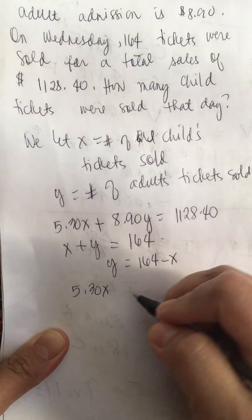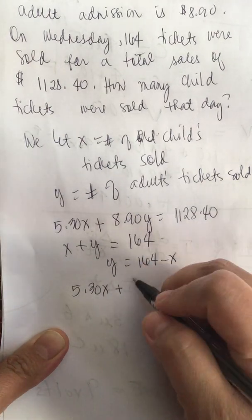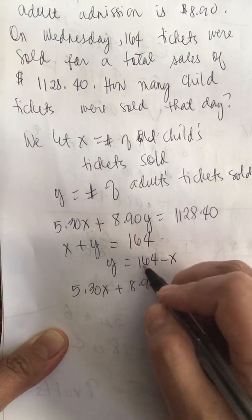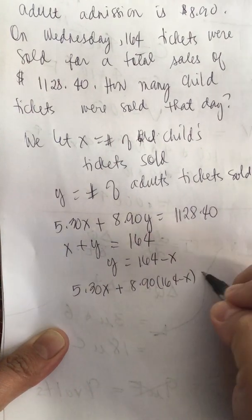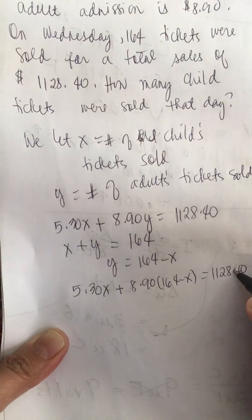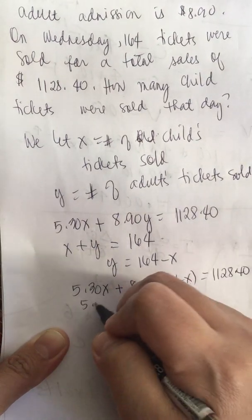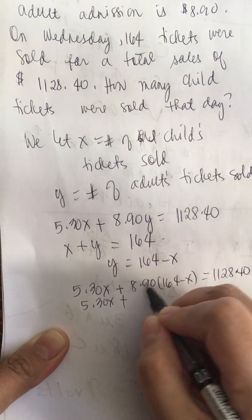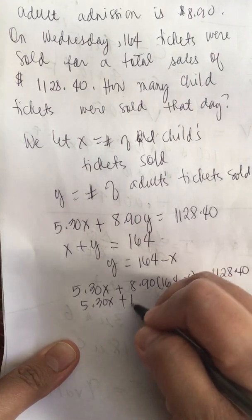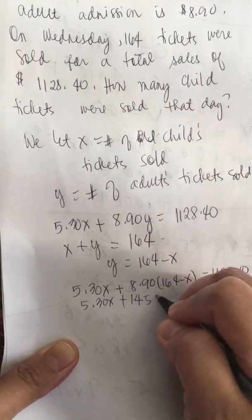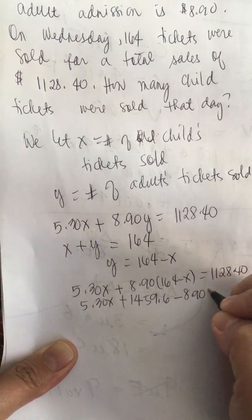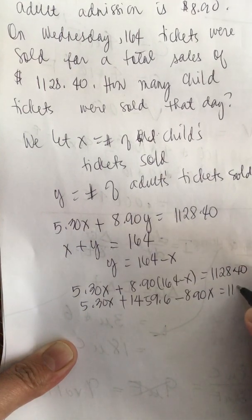Substituting y equals 164 minus x into the first equation, we get: 5.30x plus 8.90 times (164 minus x) equals 1,128.40. Expanding: 5.30x plus 8.90 times 164 equals 1,459.60, minus 8.90x equals 1,128.40.